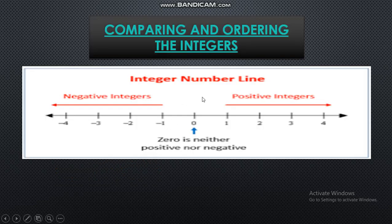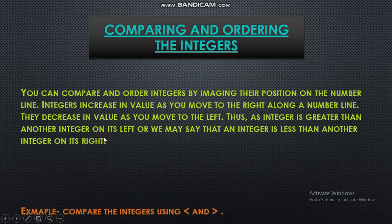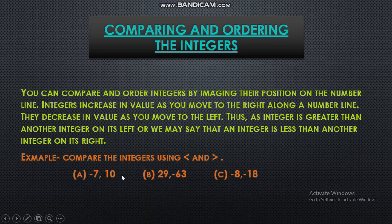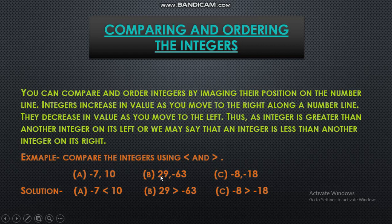Next topic is comparing and ordering integers. When you go to the right hand side of the number line, the value goes on increasing, and when you go to the left hand side, the value goes on decreasing. So while finding answers, imagine the number line. For minus 7 and minus 10: minus 7 is to the right, so minus 7 is bigger. For 29 and minus 63: 29 is to the right hand side, so 29 is bigger. For minus 8 and minus 18: minus 8 is on the right and minus 18 is on the left, so minus 8 is bigger.